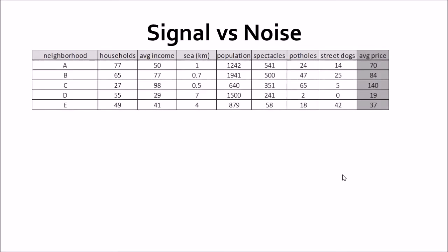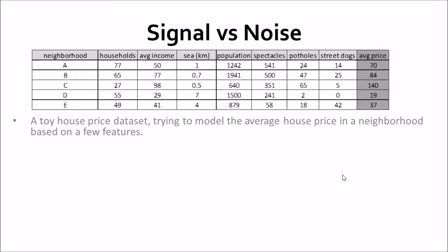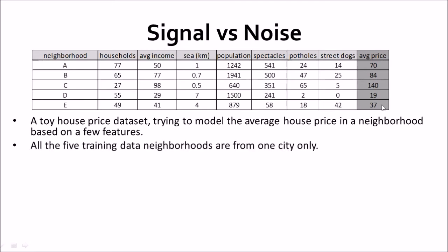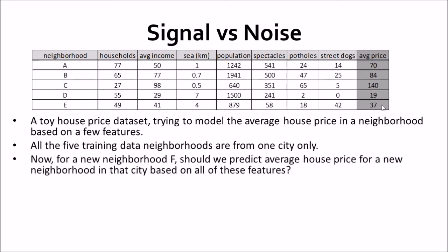Now, signal versus noise. Consider this toy dataset of 5 neighborhoods of a city — our job is to find the average price in each neighborhood. All 5 training samples are from one city. If we are given a new neighborhood F, should we predict the average house price based on all features? The features are: household average income, proximity to the sea, population, number of people wearing spectacles, number of potholes, and number of street dogs.